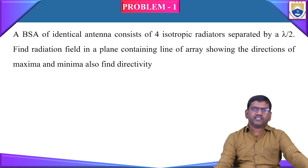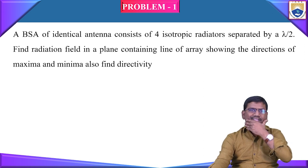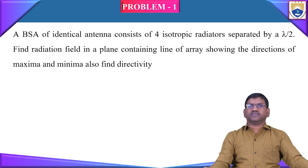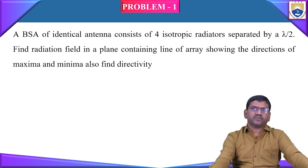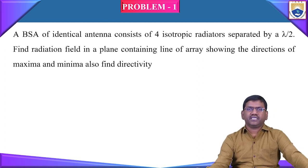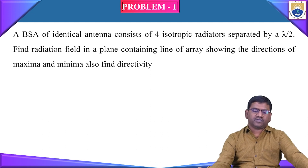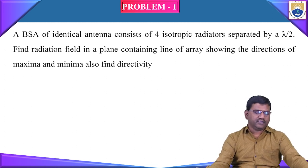BSA stands for broadside array. A broadside array of identical antennas consists of 4 isotropic radiators separated by lambda by 2. Find the radiation field in a plane containing the line of array, showing the directions of maxima and minima, and also find the directivity. In the previous session we have seen how to draw the radiation pattern for 4 elements, similar to how we drew for isotropic elements for a linear array. We are going to draw the radiation pattern by finding the values of maxima and minima.